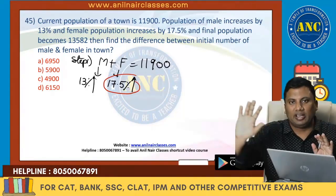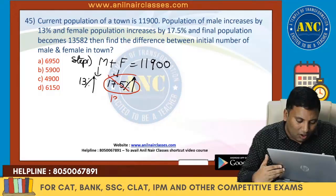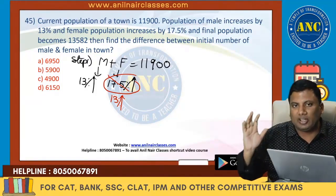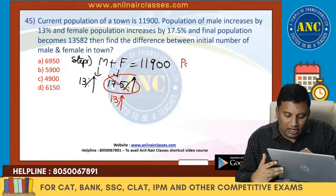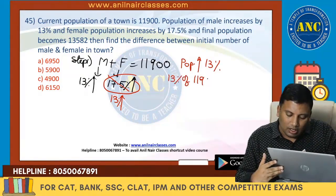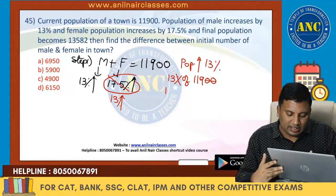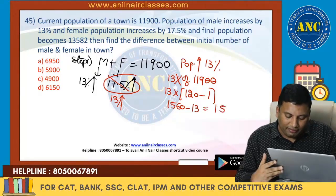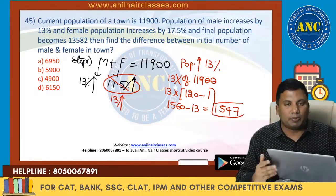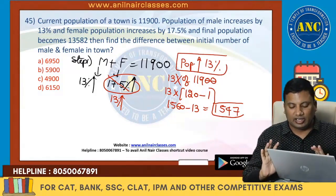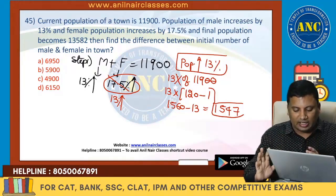First, forget about the 17.5% — park it for some time. If female also increases by 13%, and male population increases by 13%, then population also increases by 13%. So 13% of 11,900: cancel two zeros — 13 into 119. That is 120 minus 1, giving 1560 minus 13, which is 1547. If male increases by 13% and female also increases by 13%, population also increases by 13%, so the actual increase in population is 1547.